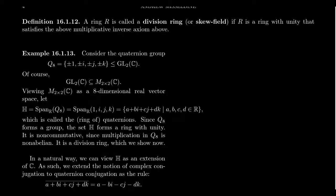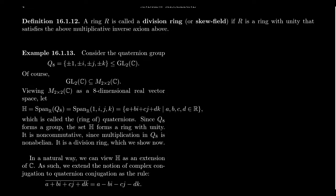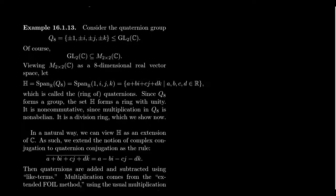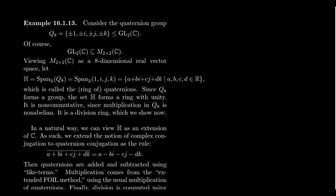That is, every finite division ring is actually a field. But let me give you an example of an infinite one, and this is going to be based upon the quaternion group that we studied previously in this lecture series. The quaternion group consists of eight elements: plus or minus 1, plus or minus i, plus or minus j, and plus or minus k.